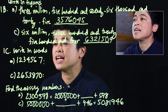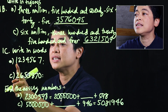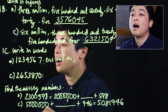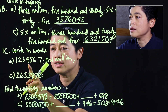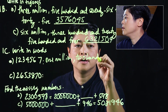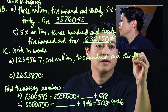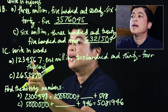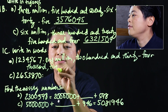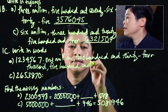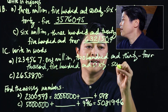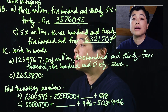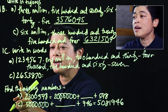The next exercise says 'write in words.' Reading 1,234,567 — this is one million, two hundred and thirty-four thousand, five hundred and sixty-seven. When reading these bigger numbers it's best to stop at each comma.